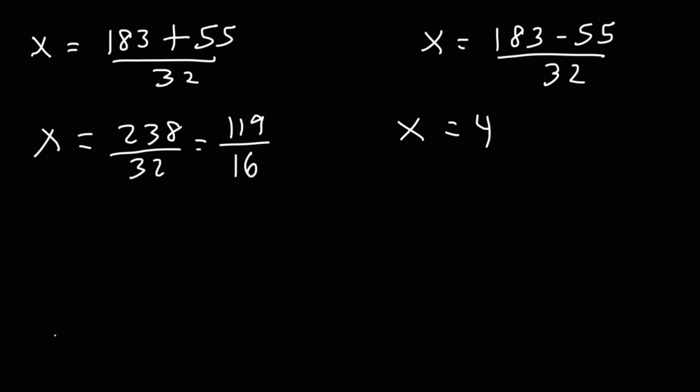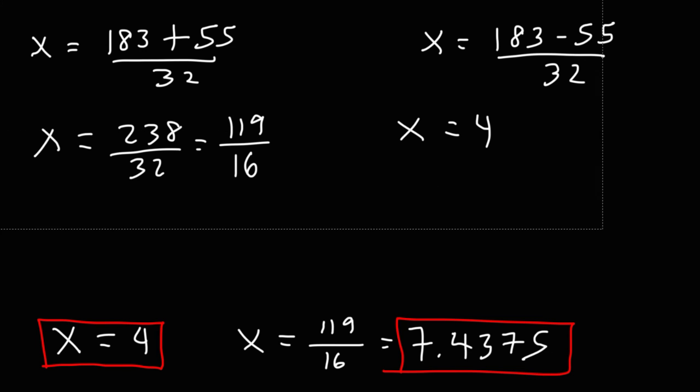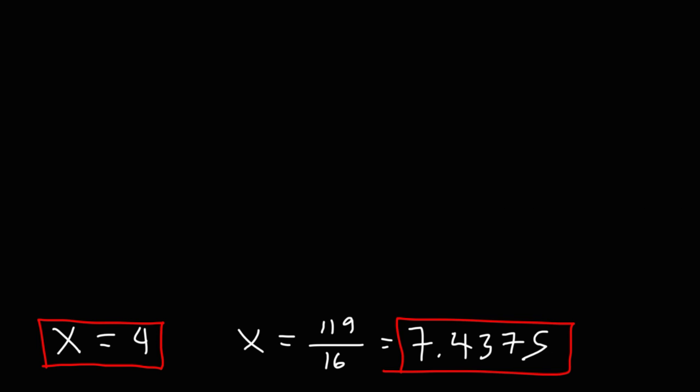So we have two potential answers. X is equal to 4, and x is equal to 119 over 16, which has a decimal that is 7.4375. Now we need to check for extraneous solutions. We need to make sure that both answers or even one of the answers is correct.